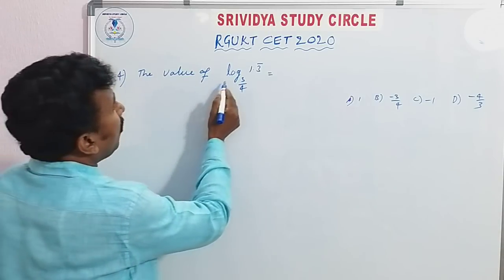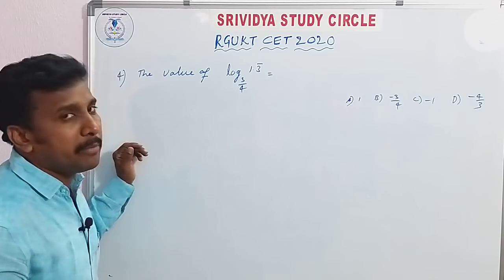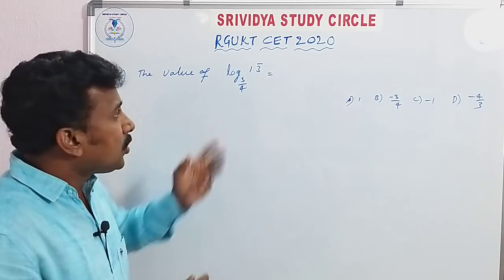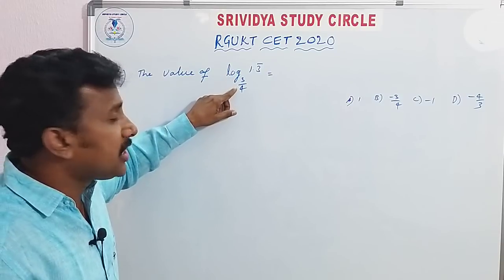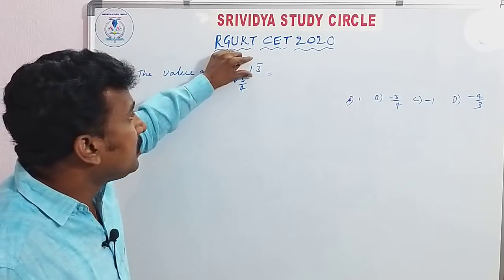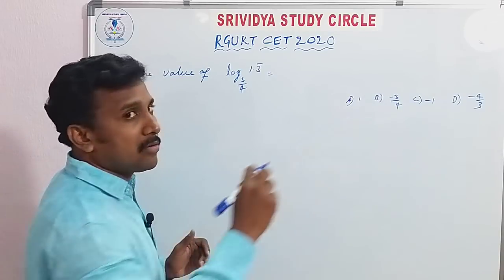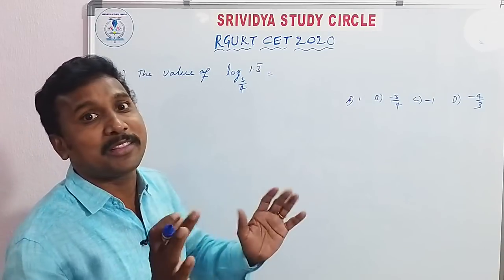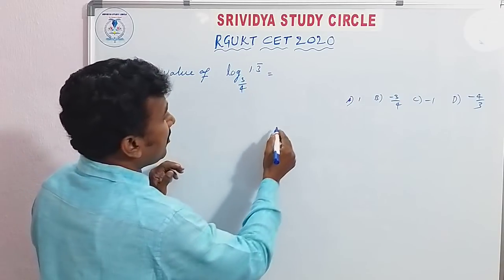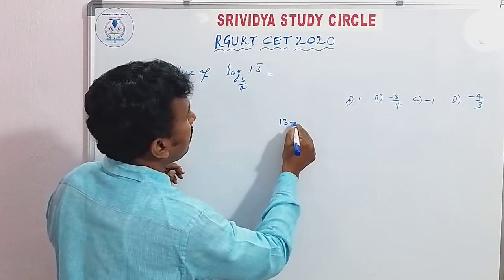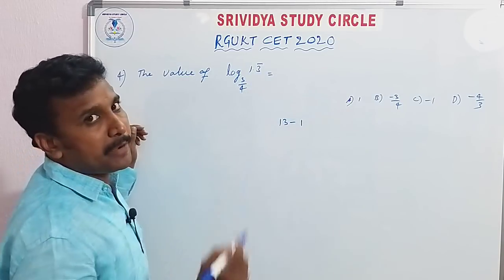The value of the logarithm of 1.3 bar to the base 3 by 4 is equal to what? Here, 1.3 bar needs to be converted using the p by q formula for recurring decimals. The value of 1.3 bar: 3 is repeating, so 1.3 bar equals 1 and 3/9, which simplifies.